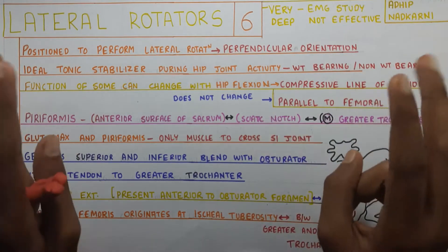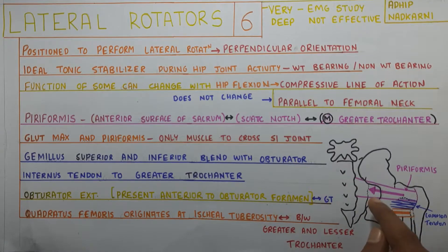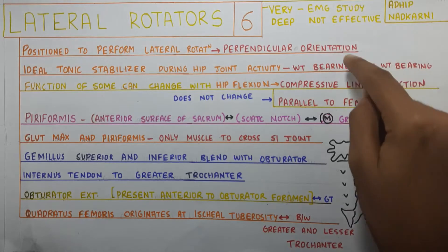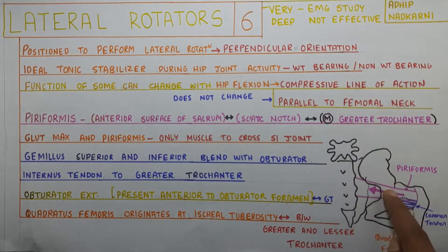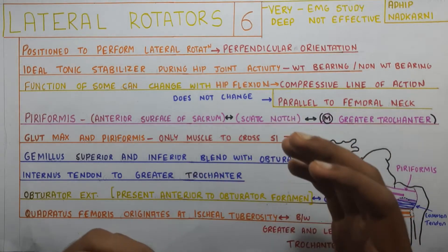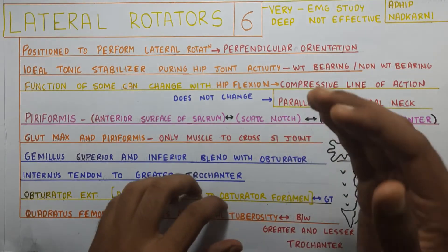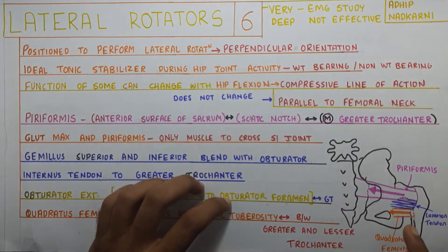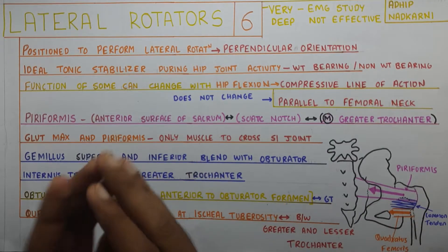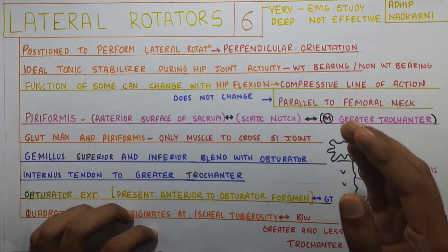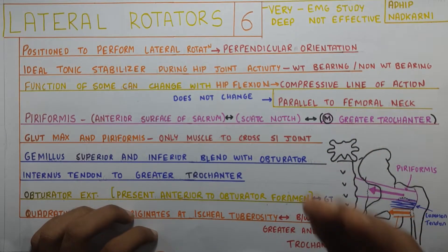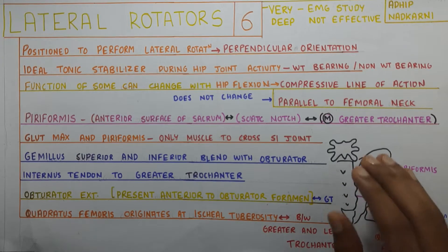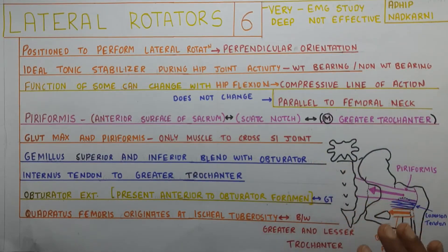This is called false sciatica or fake sciatica, because true sciatica happens when there is a disc bulge. When there is a disc protrusion or bulge that compresses on the sciatic nerve from above, that's when you get true sciatica pain. But sometimes this same sciatica pain can be felt due to tightness of the piriformis muscle, and it can be easily fixed by stretching the piriformis muscle — the figure-four stretch can be given for this.